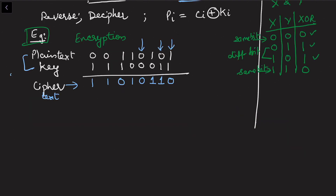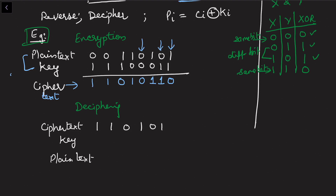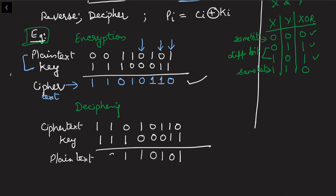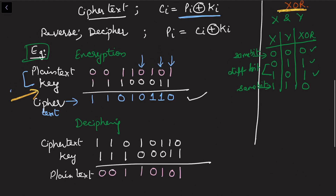For deciphering, we take the cipher text we obtained and apply the same key — because we are doing symmetric cryptography, the key is the same. Applying the XOR operation again gives us back the original plain text. This confirms that with the correct key and XOR operation, we can recover the plain text from the cipher text.